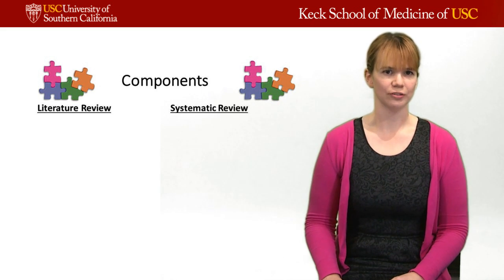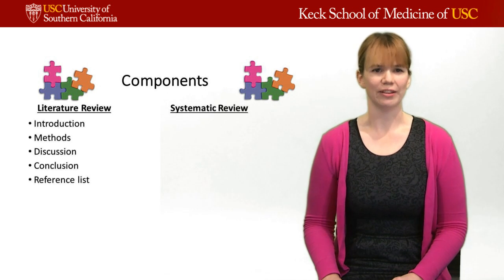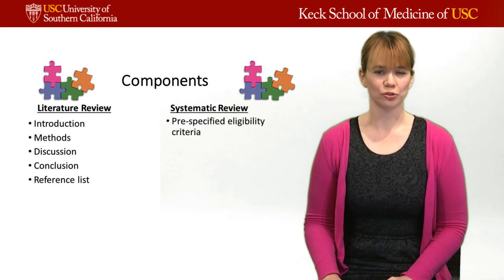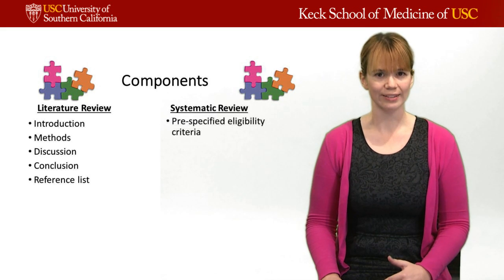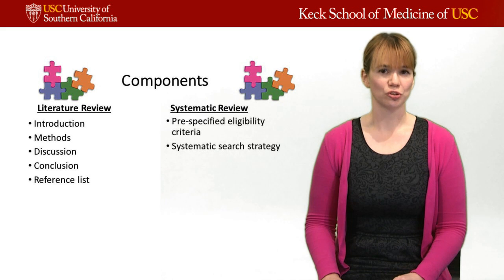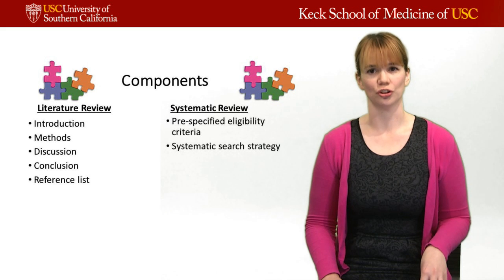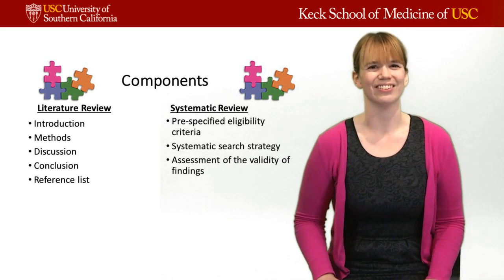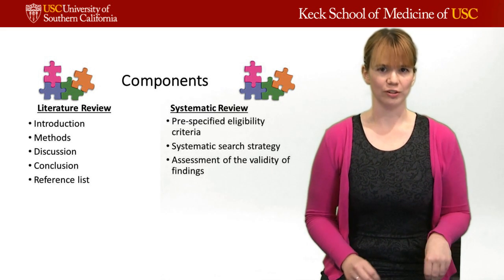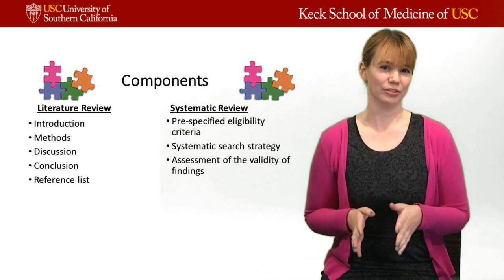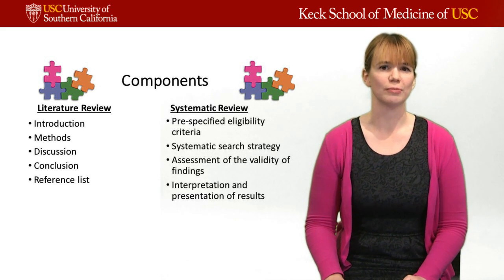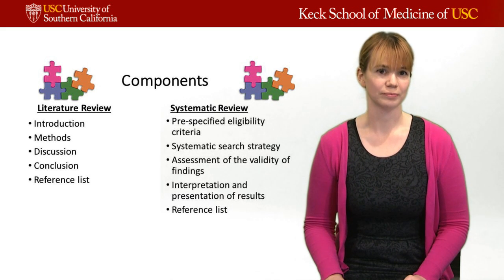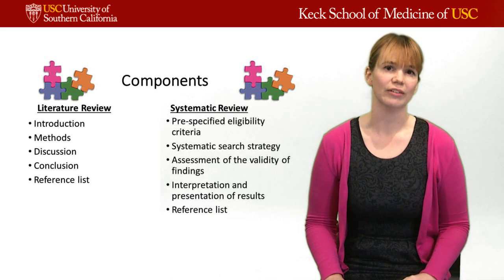The components of a standard literature review look familiar to any published article: intro, methods, discussion, conclusion, and a reference list. Whereas a systematic review includes pre-specified eligibility criteria — before the search was even created, the authors tell you why something will be included or excluded. The systematic search strategy is also included, showing which databases and terms were used. They also assess the validity of findings and provide a flow chart showing what was excluded and included, taking you from thousands of articles down to just a dozen. There's an interpretation of results, sometimes using statistical methods, and a reference list.